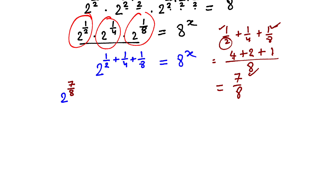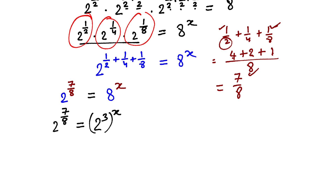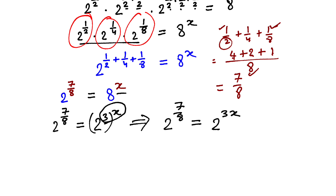This expression is equal to 8 raised to the power x. Now the bases are different — on the left hand side we have base 2, on the right hand side we have base 8. So we rewrite 8 as 2 raised to the power 3, since 2 × 2 × 2 = 8, and then it is raised to the power x. It can further be written as 2 raised to the power 7 by 8 is equal to 2 raised to the power 3x, after multiplying the powers.